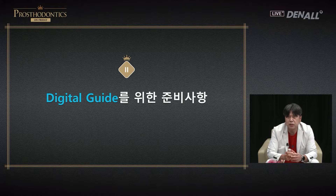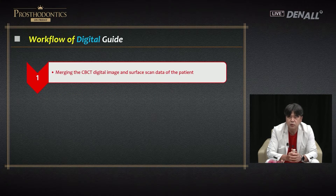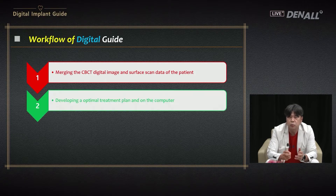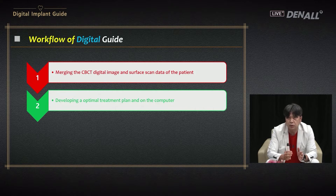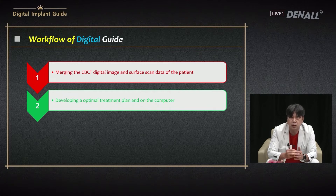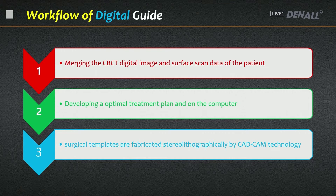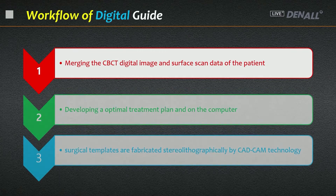To make a guide, preparation is required. First, CT and scan data — scan data can be acquired from the intraoral scanner or model scanner — must be merged. Second, based on the merged data, implant size and position need to be determined on software. OSTEM uses Implant Studio software, on which we design the implant; abutment and crown can also be designed together. The last step is to print the guide, which is like a template.